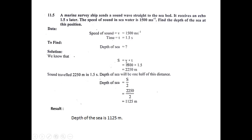Speed is 1500 meters per second and total time is 1.5 seconds — the time for the sound wave to go from the ship to the seabed and reflect back. Total distance comes out to 2250 meters. This is the two-way distance. To find the depth of the seabed, we simply divide this distance by 2.